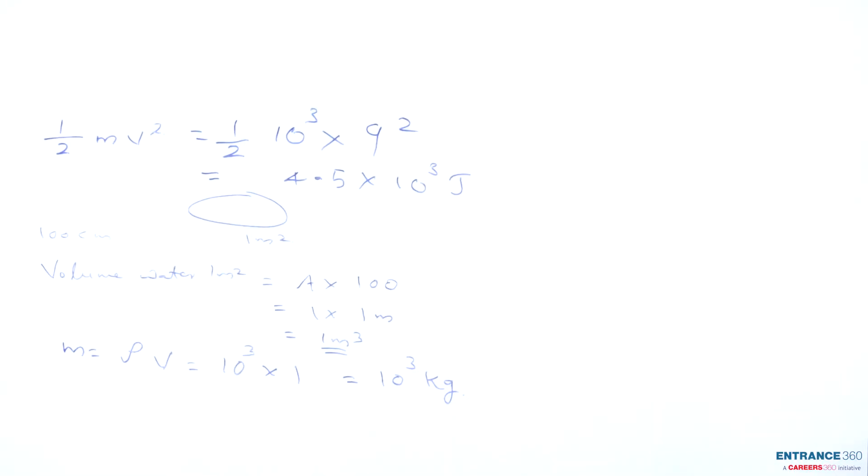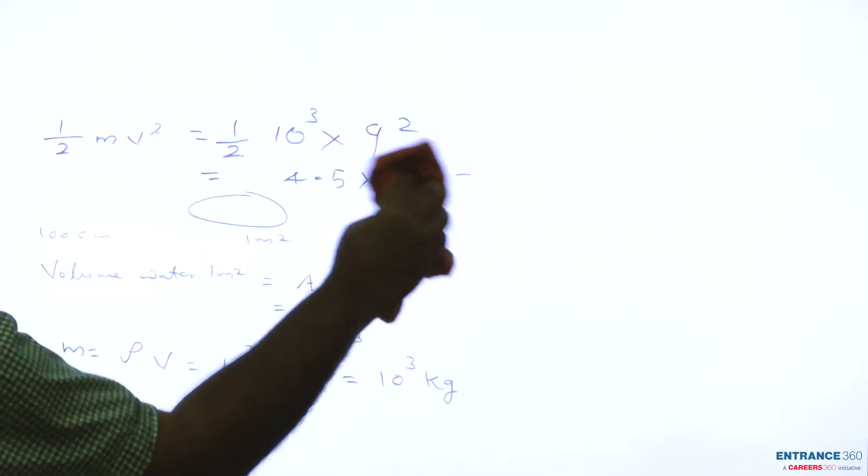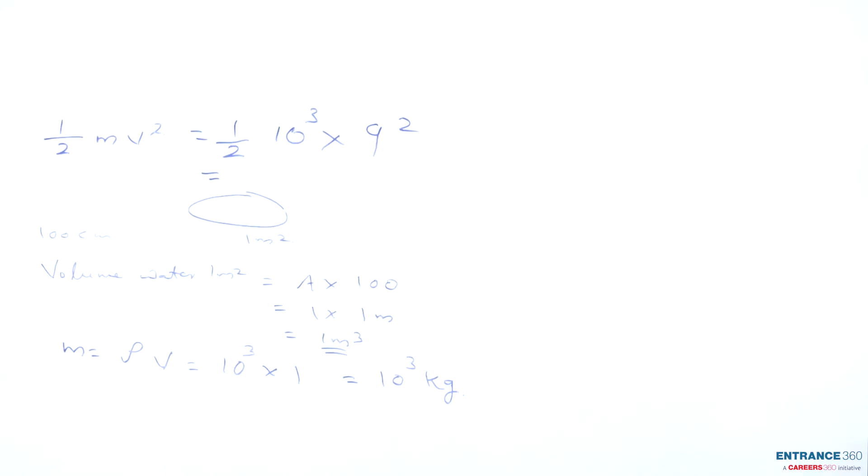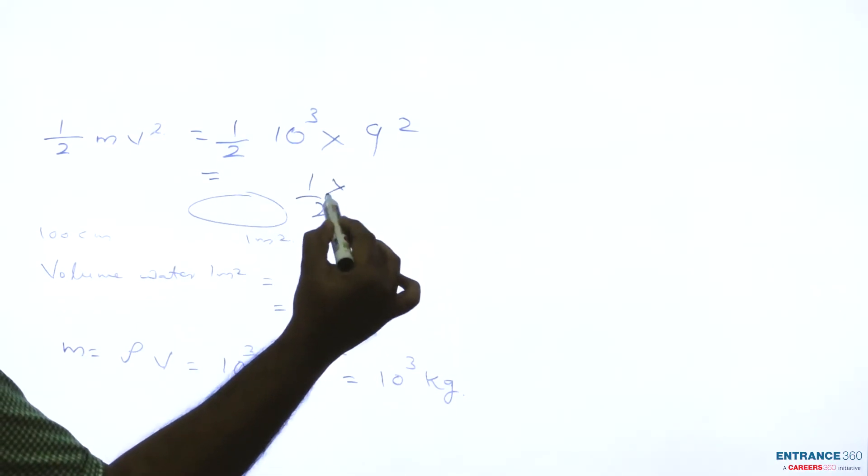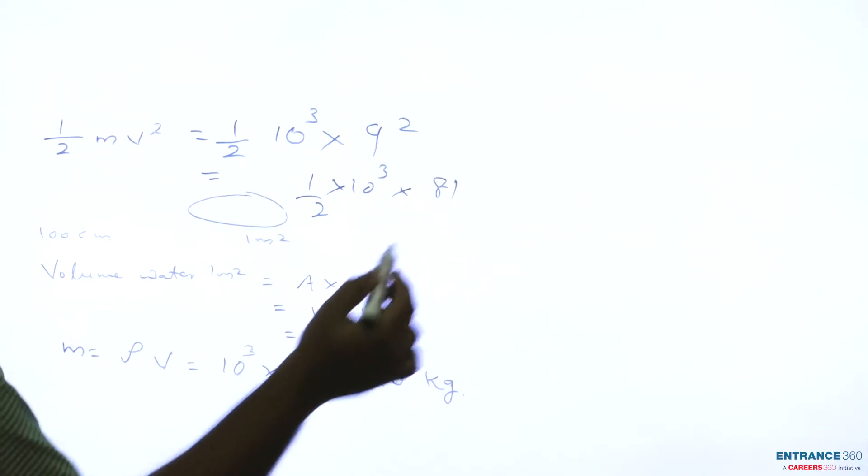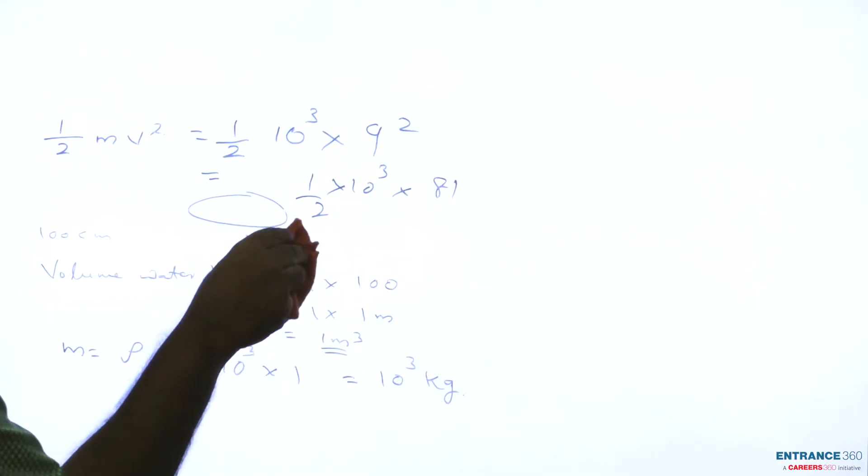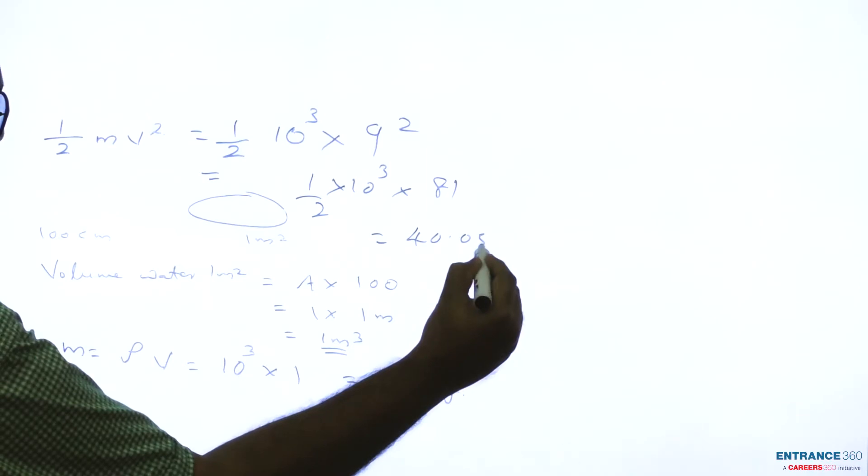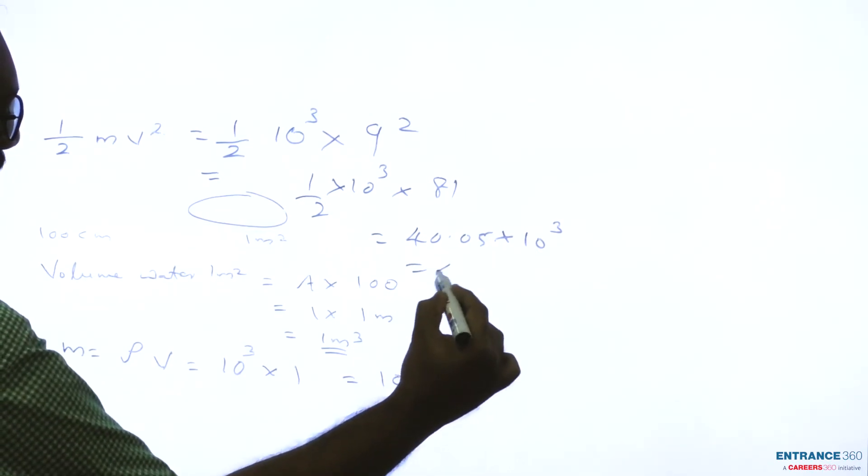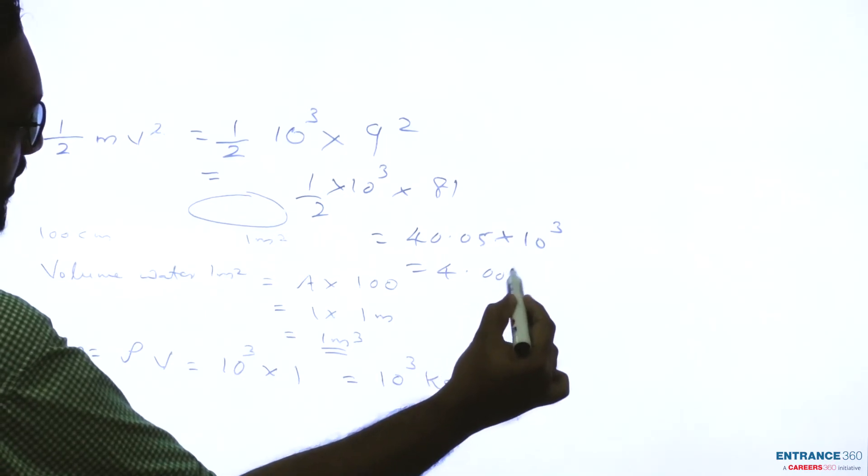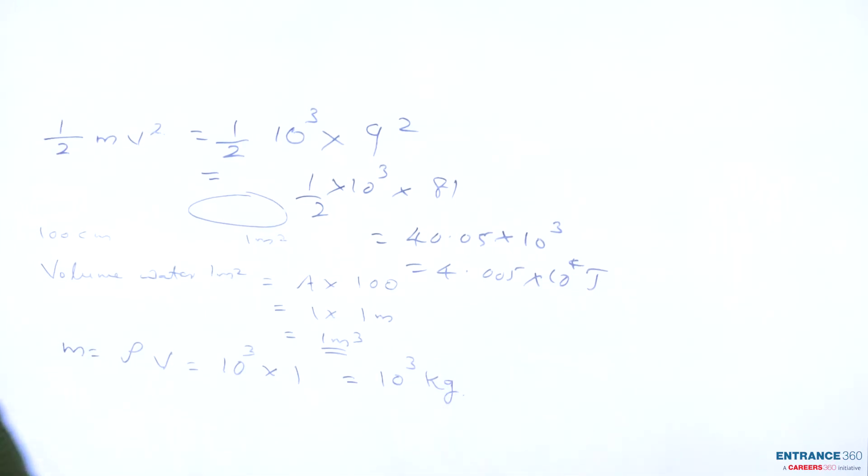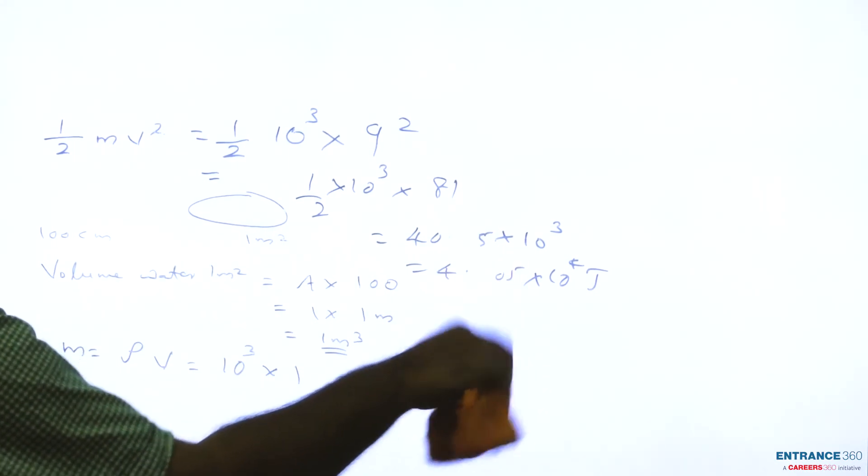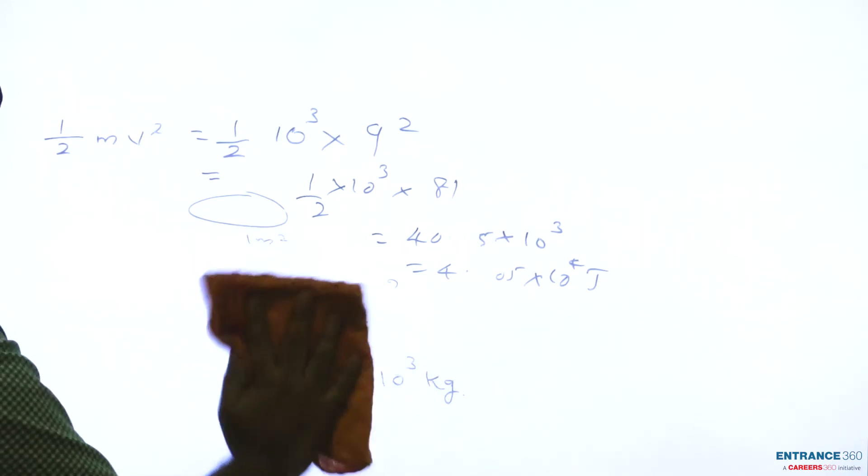4.5 times 9 gives half times 10³ times 81. Half of 81 is 40.5, which equals 40.5 × 10³, which equals 4.05 × 10⁴ joules.